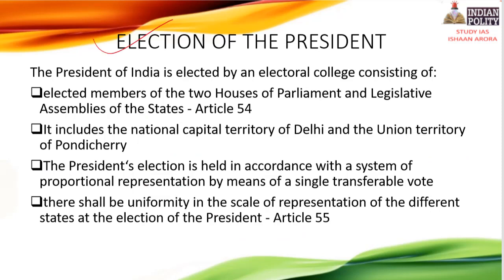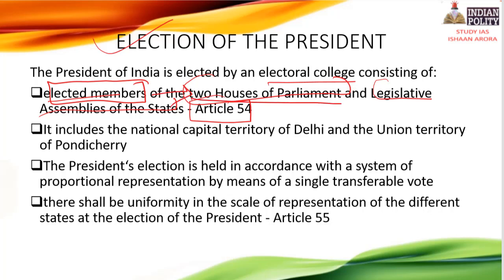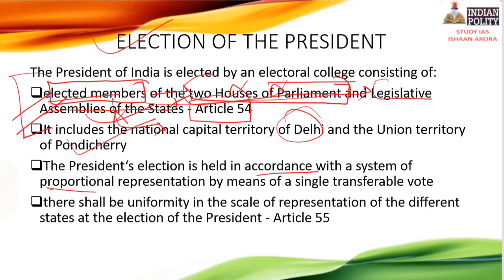The President of India is elected by an electoral college consisting of elected members of the two houses of parliament and legislative assemblies of the states. This is Article 54. This means that the President is indirectly elected, in accordance with the system of proportional representation by single transferable vote.